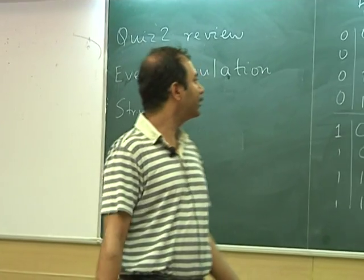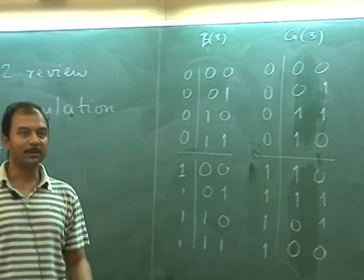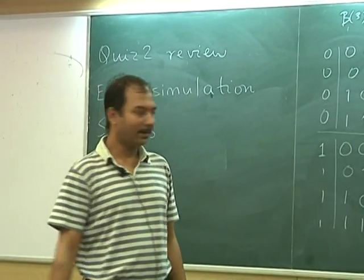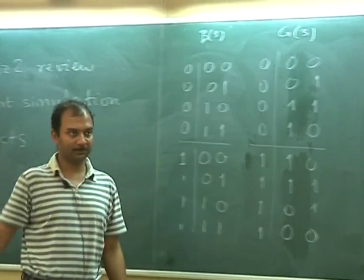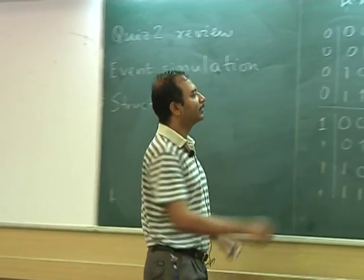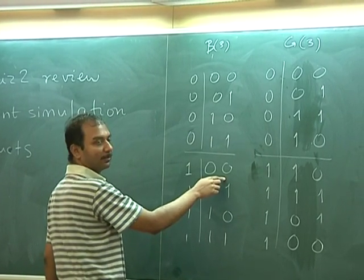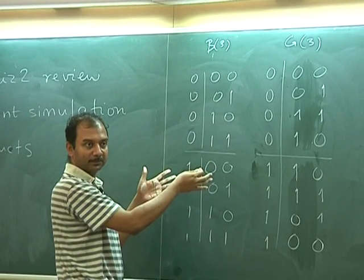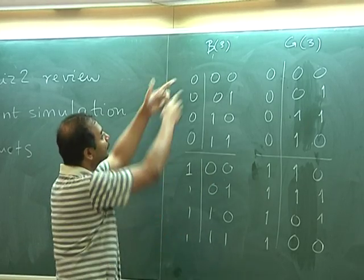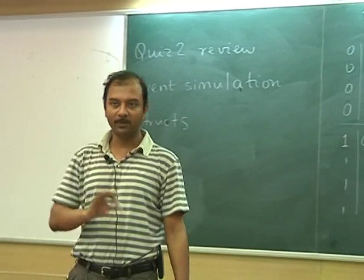And gray codes have this beautiful property that as you go from one code word to the next, exactly one bit changes. In fact, even when you roll back from the last one to the first one. Which is not the case with standard binary code because as you can see from 0, 1, 1, to 1, 0, 0, all three bits change. From 1, 1, 1, to 0, 0, 0, again all three bits change. So there are many transitions where multiple bits are changing.